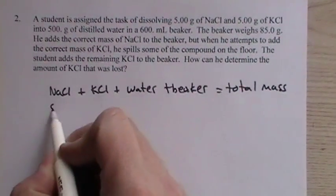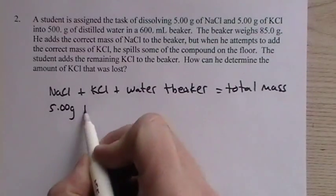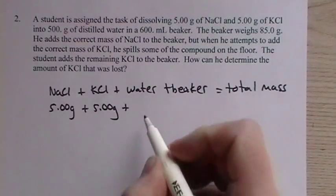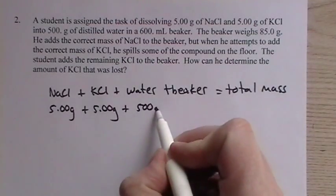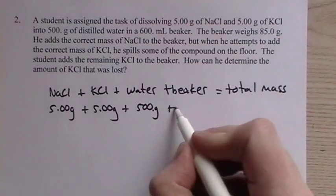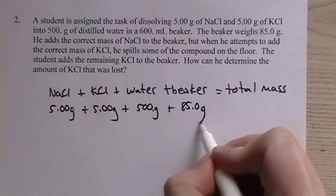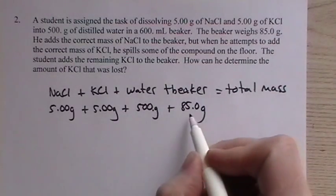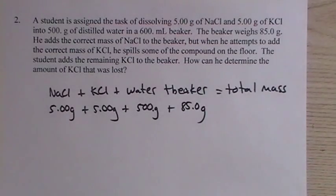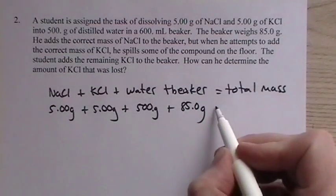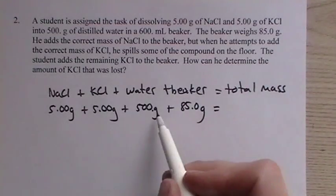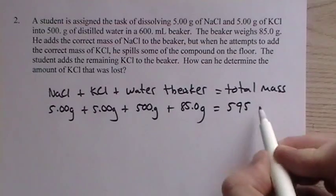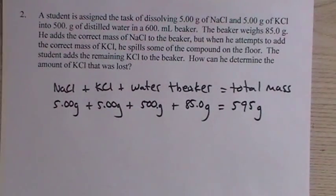And we know that we have 5 grams that we weighed out. 5 grams of the KCl, we lost some, but we know we measured out 5 grams. We have 500 ml of the water and 85 grams, actually it's 500 grams of water, and 85 grams for the beaker. So the total mass should have been, when the student was done, so 585, so this would be 595. That's what it should have been.